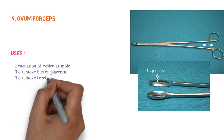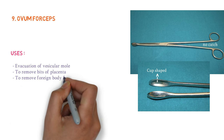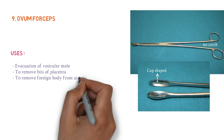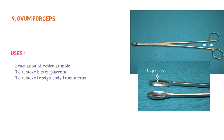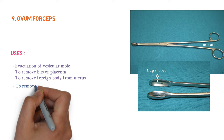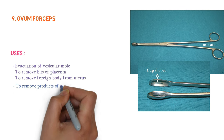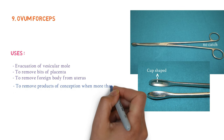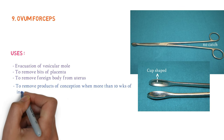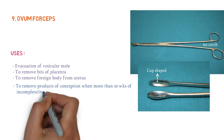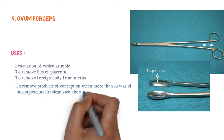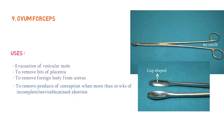Ovum forceps is also used to remove products of conception when more than 10 weeks of incomplete, inevitable, or missed abortion. These are the uses of ovum forceps. Let's revise quickly so you know at least the name of each instrument.